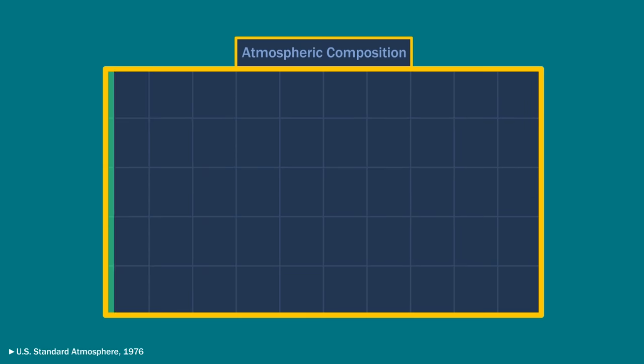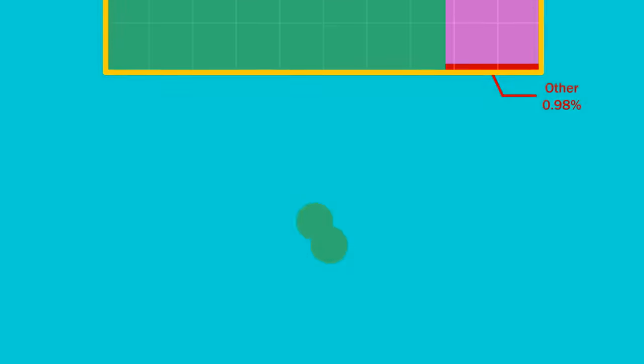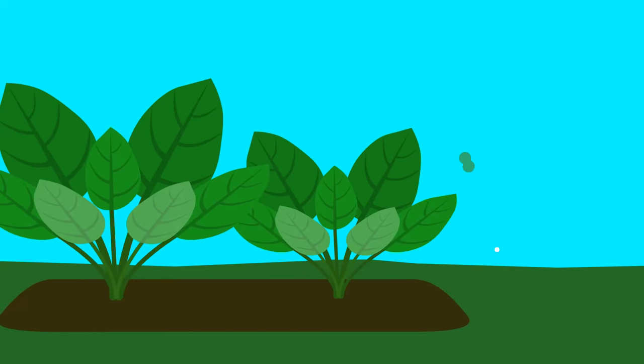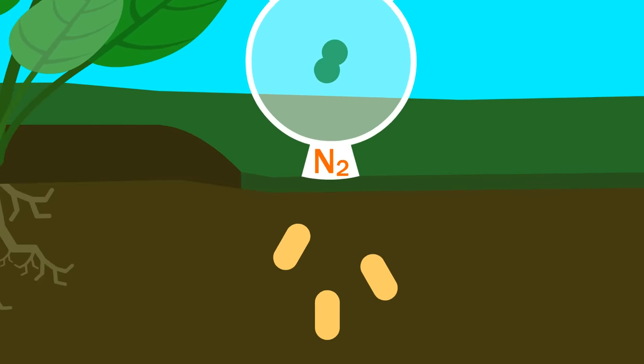Nitrogen makes up 78% of the Earth's atmosphere by volume. But most of this nitrogen takes the form of two nitrogen atoms strongly bonded together, which isn't very reactive and is useless to plants. For it to become plant-available, we need the help of bacteria.